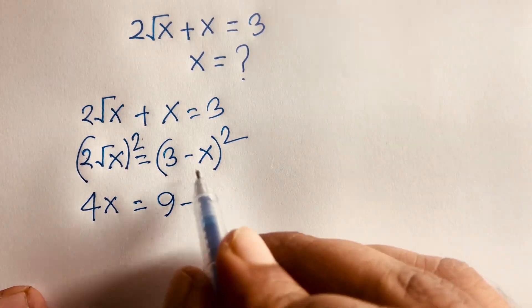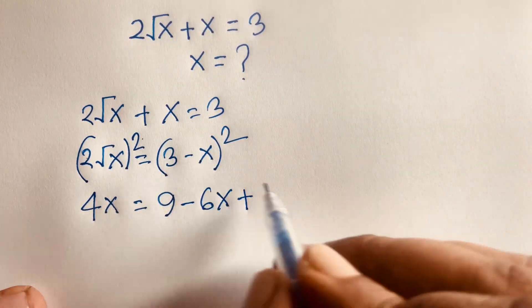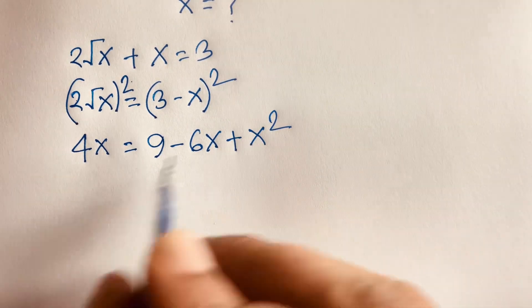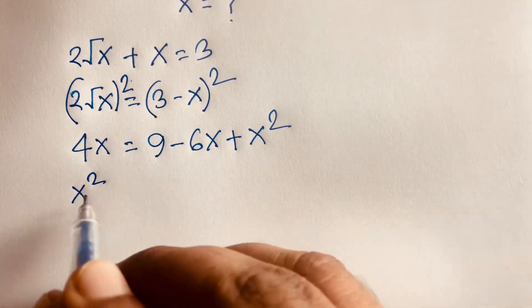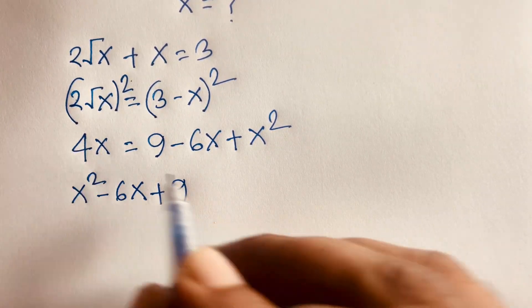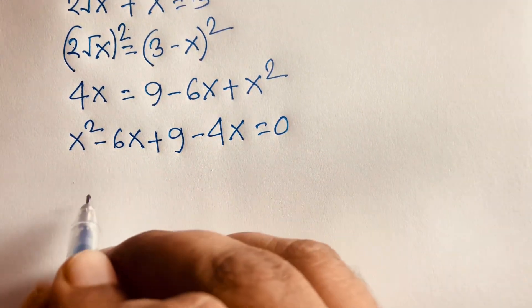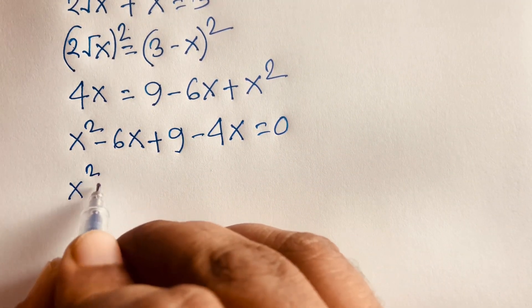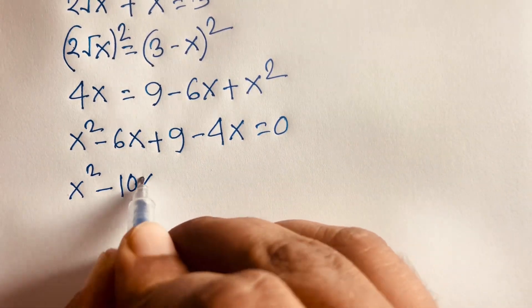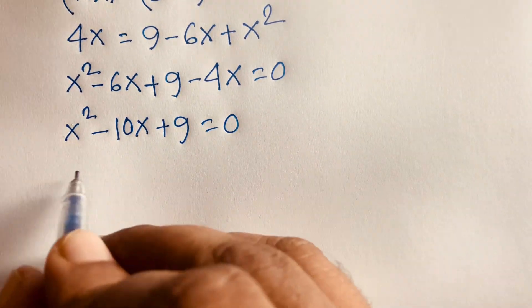So 3² = 9, minus 2 × 3 × x = 6x, plus x². This gives us 4x = x² - 6x + 9. Rearranging: x² - 6x - 4x + 9 = 0, which becomes x² - 10x + 9 = 0.